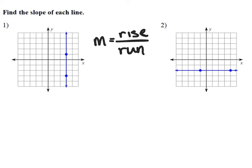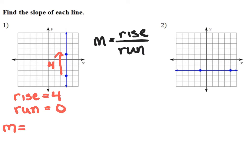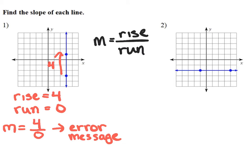In this example, we are continuing to determine the slope of the line. Starting from the bottom point and moving to the top, we are going up four units, so the rise equals four. However, we're not moving at all side to side, so the run is zero. When we substitute into the slope formula, we have slope equals four divided by zero, which gives an error message, because you can't divide a number by zero — it's not a valid calculation. So the slope is undefined.